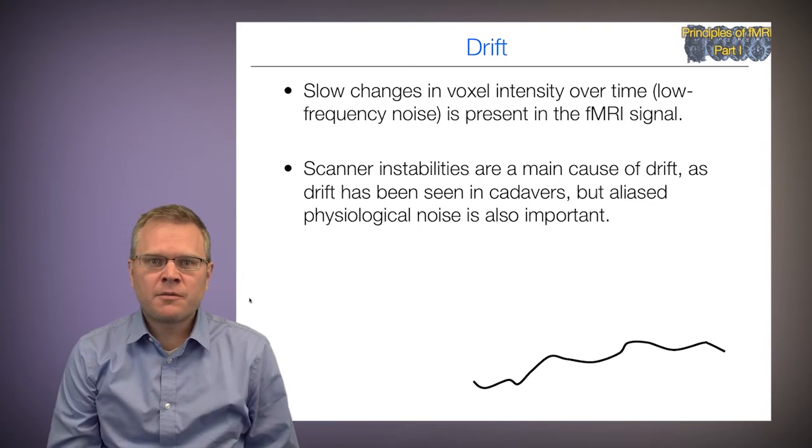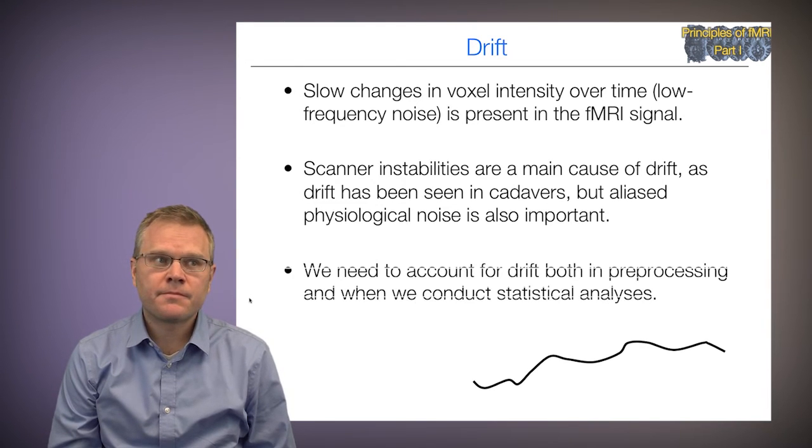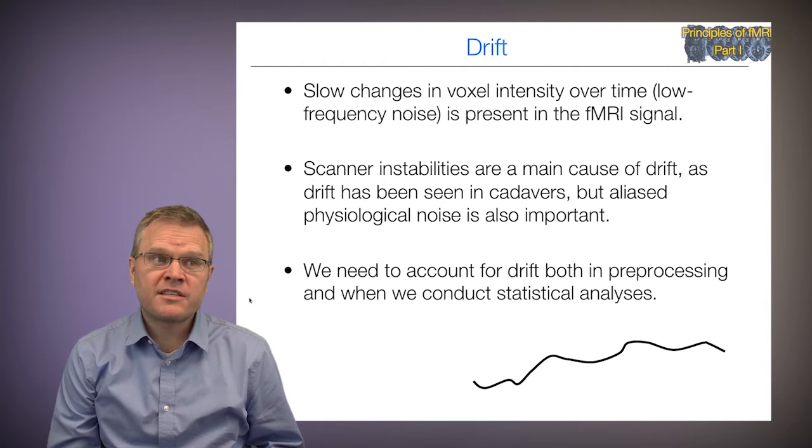All fMRI data contains some artifacts, so we have to live with some of them. But it's very difficult to deal with bad artifacts during the analysis process, so try to avoid them during acquisition by working with your physicist to get the best acquisition possible. When modeling fMRI time series data, it's important that we understand certain non-signal-related components of the signal. One of the main components is drift — slow changes in voxel intensity over time, also called low-frequency noise, which is often or always present in fMRI signal. One of the primary reasons is thought to be scanner instabilities, as drift is seen even in cadavers or in phantoms. It's important that we account for drift both in the preprocessing and when conducting statistical analysis.